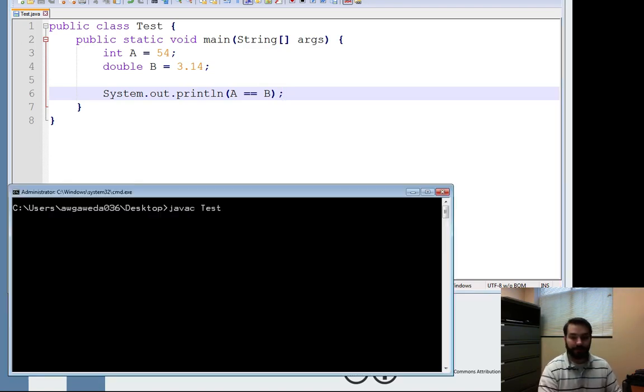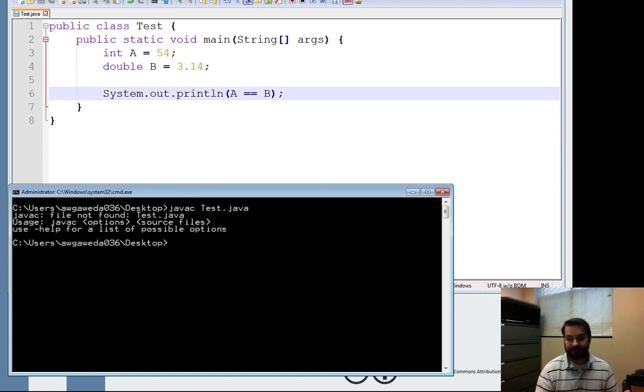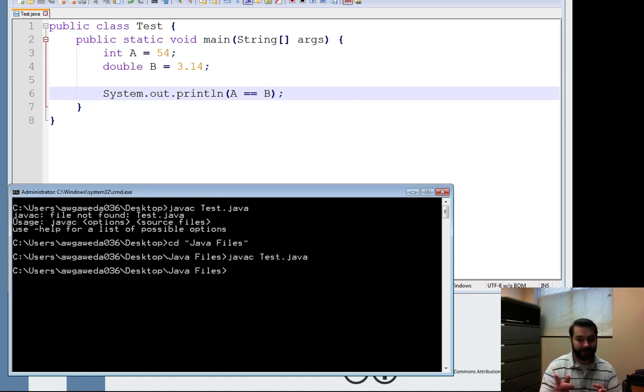So if I run through my code, test.java, could not find... oh, sorry, java files, there we are, test.java. Notice how it didn't complain about me comparing doubles and int, everything's fine. Java test. Notice how they equaled out to false.